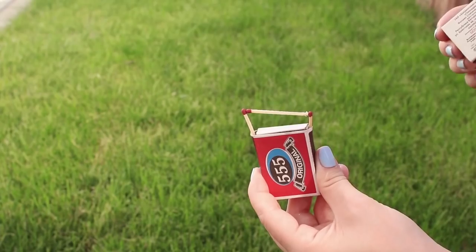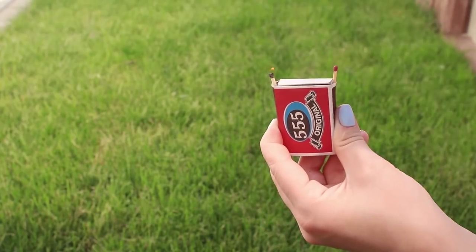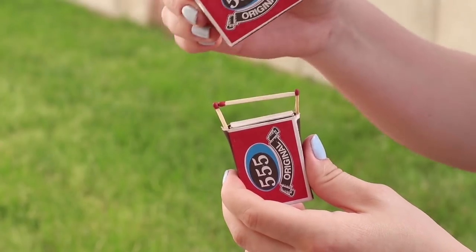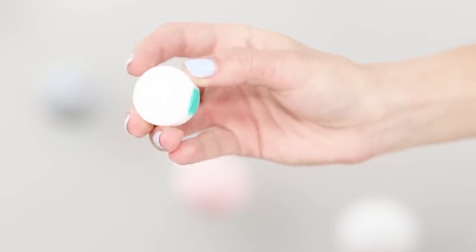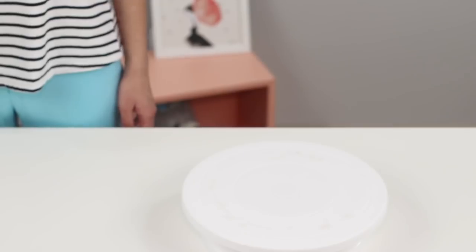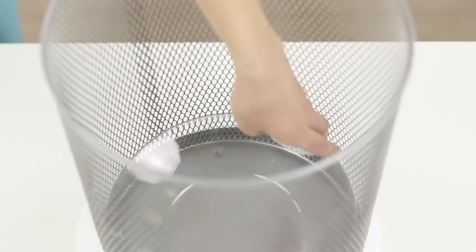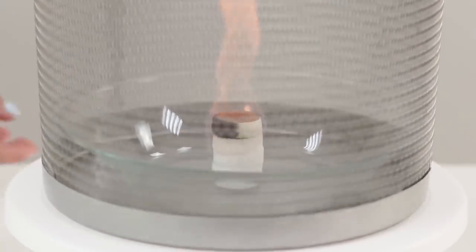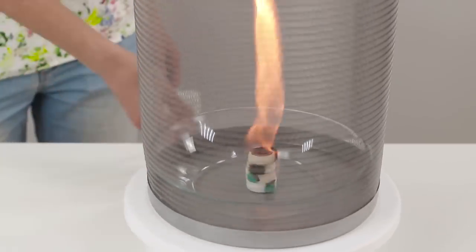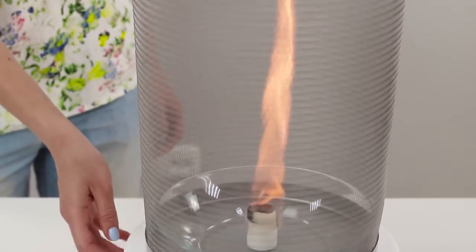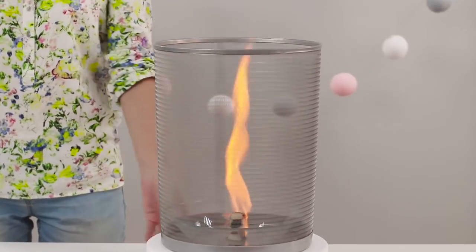This trick can only be performed outside, away from flammable objects. For the next trick, you will need a pill of dry alcohol and a metal urn. Put the urn on the spinning disc. Put dry alcohol on a plate on the bottom of the basket. Rotate it! Air whirls twist the tongue of the flame into a beautiful spiral. This is so beautiful and unusual!